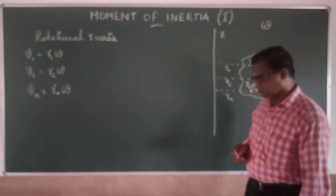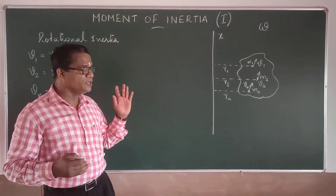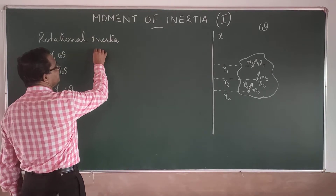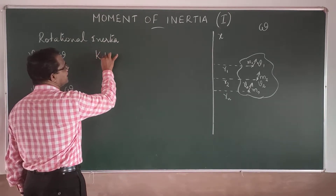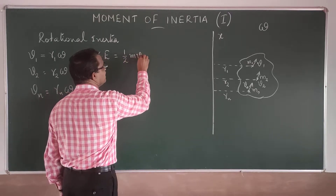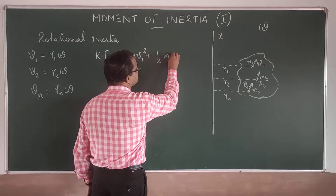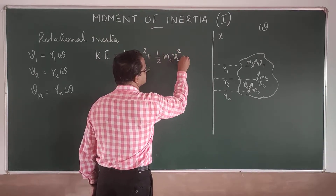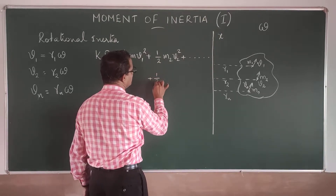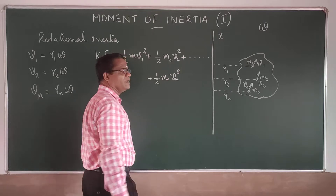If I calculate the kinetic energy of this rotating body, the total kinetic energy equals the sum of kinetic energies of all mass particles: KE = ½m₁v₁² + ½m₂v₂² + ... + ½mₙvₙ².